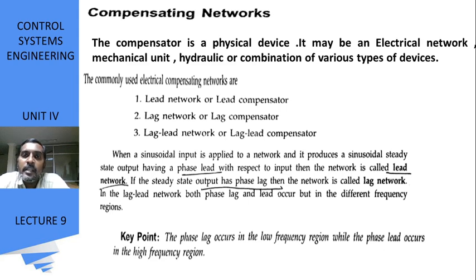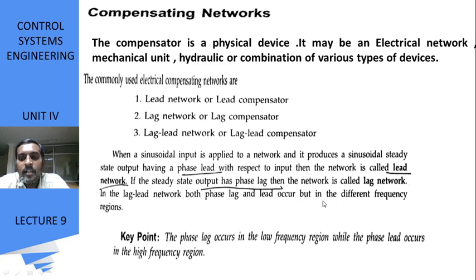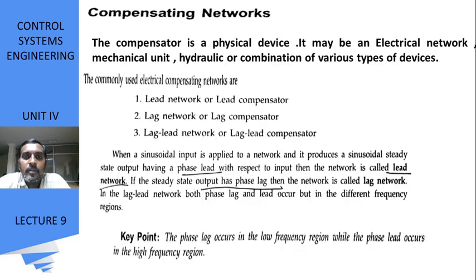When a sinusoidal input is applied to a network and it produces a sinusoidal steady state output having a phase lead with respect to input, the network is called a lead network. If the output has a phase lag, the network is called a lag network. In a lag-lead network, both phase lag and phase lead occur but at different frequencies — phase lag occurs in the low frequency region and phase lead occurs in the high frequency region. In the next class we are going to discuss the lead compensator in detail.